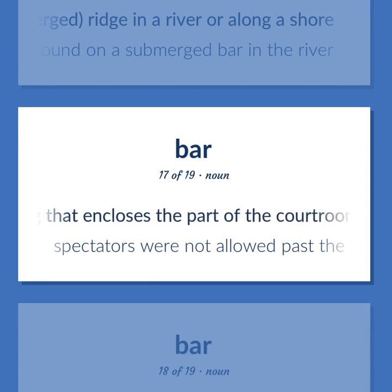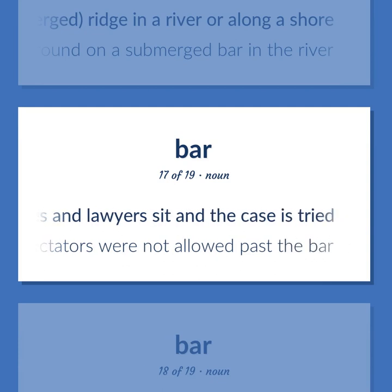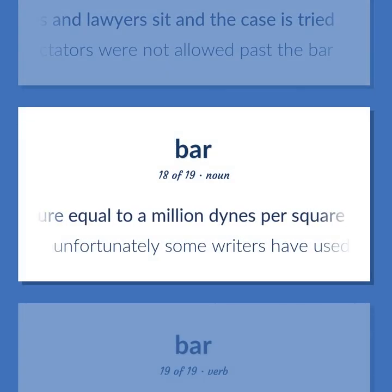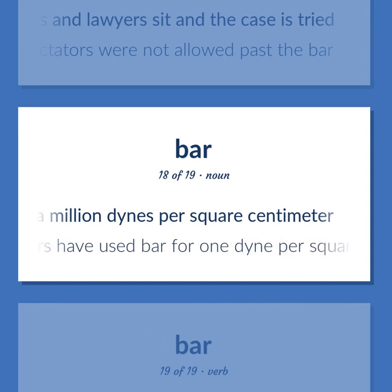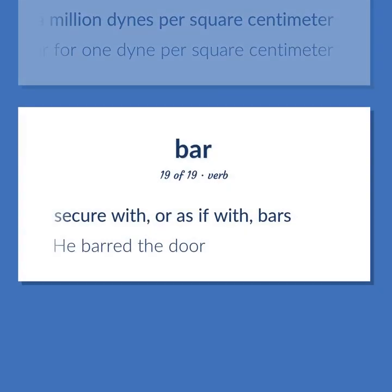Bar: law — a railing that encloses the part of the courtroom where the judges and lawyers sit and the case is tried — 'Spectators were not allowed past the bar.' Meteorology — a unit of pressure equal to a million dynes per square centimeter. Secure with, or as if with, bars — 'He barred the door.'